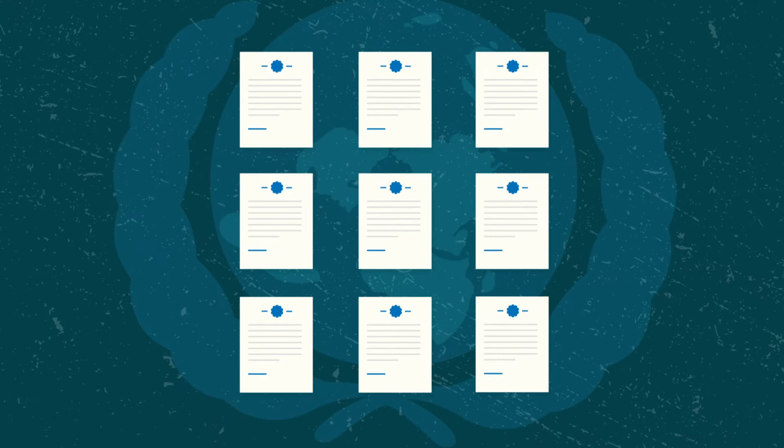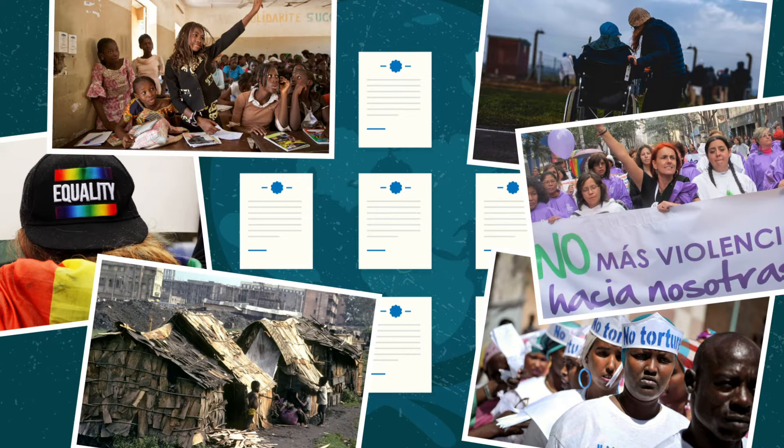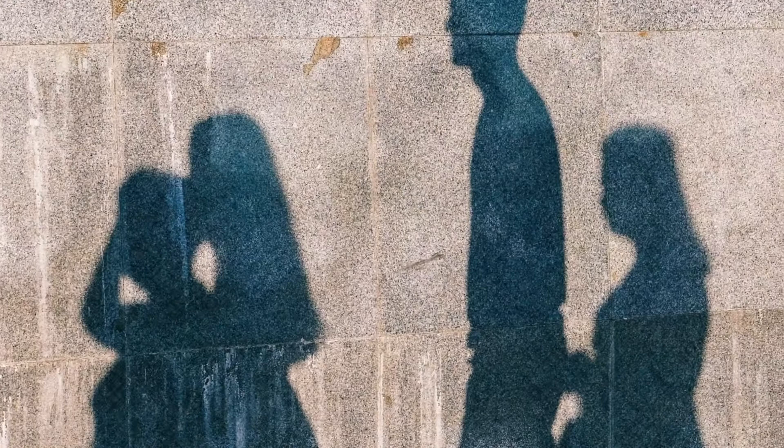The United Nations human rights system is based on a number of key documents and agreements, including nine core treaties. These treaties cover some of the most basic, fundamental rights and freedoms that should be available to and enjoyed by everyone. When a country ratifies a treaty, it is bound to uphold those rights and freedoms, protecting them in its laws and for its people.